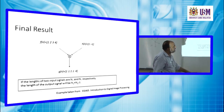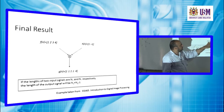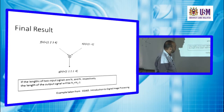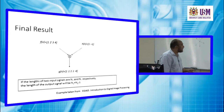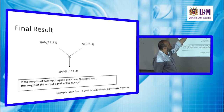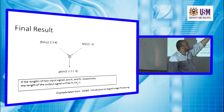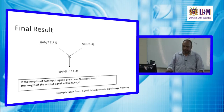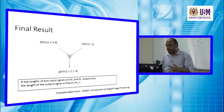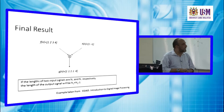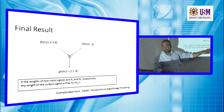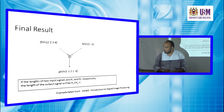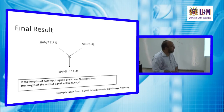The result is g(n) = [1, 1, 1, 1, −4]. An important rule: the length of the resulting convolution equals the length of the first signal plus the length of the second signal minus one. Here: 4 + 2 − 1 = 5, which matches our result.